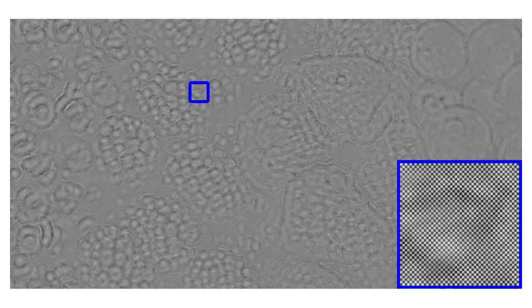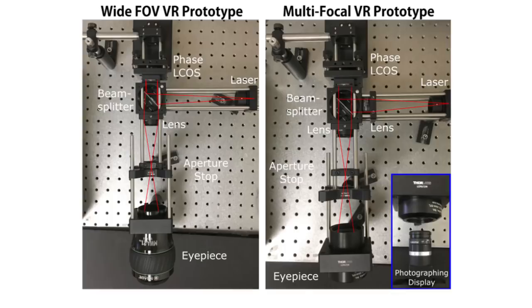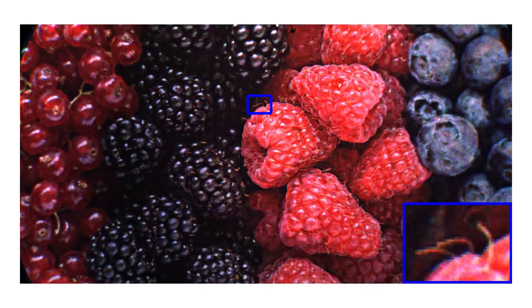We use a variant of the double phase technique to control amplitude using a phase-only spatial light modulator. Here we show an example phase hologram using a smooth phase profile. We combine our holographic projector with various eyepieces to build virtual reality displays.